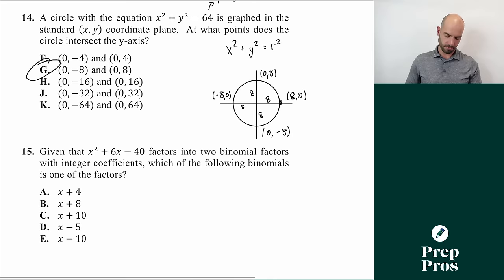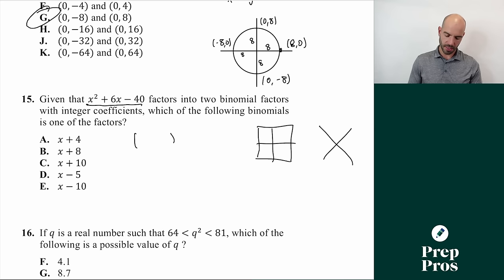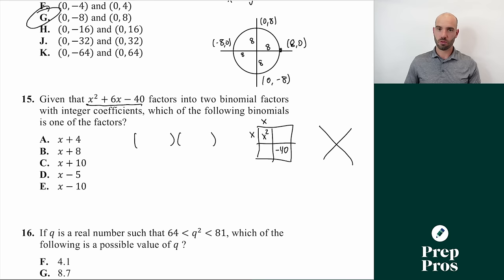Number fifteen: factor x² plus 6x minus 40. Using the box method or guess and check, we need two numbers that multiply to -40 and add to +6. Those are +10 and -4, giving factors of (x + 10)(x - 4). The matching answer is C.